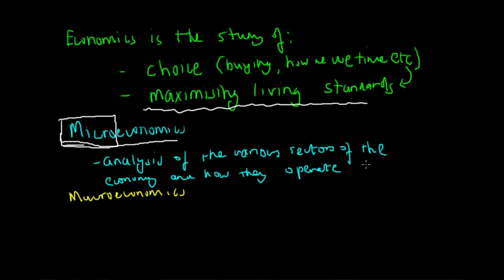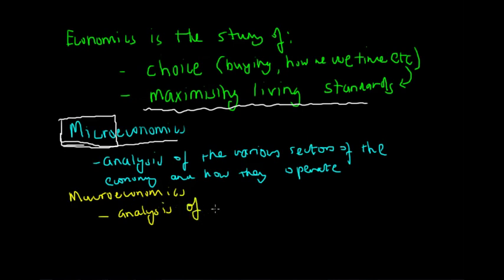Microeconomics is an analysis of the various sectors of the economy and how they operate. This relates to topics like price setting, individual firm behaviour, employment, and other topics we'll return to in further lectures. Examples include fish and chip shops, coffee shops, clothes stores, and your local milk bar — they all relate to the microeconomic factors of economics. Secondly, we have macroeconomics, which is a broader analysis of how the general economy operates.